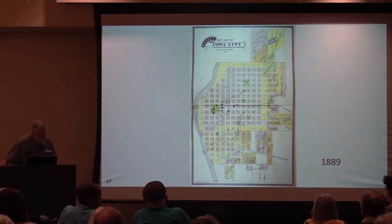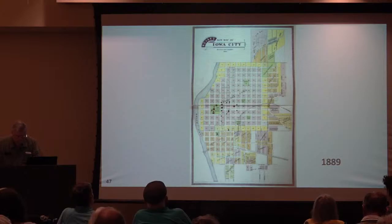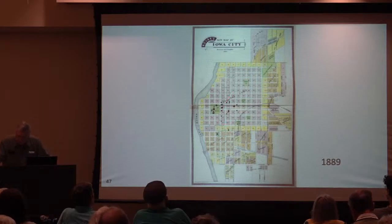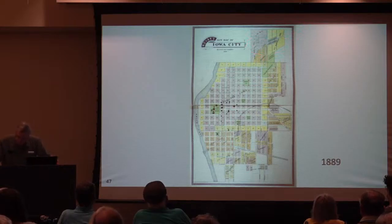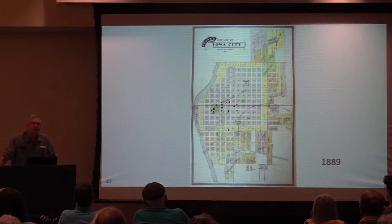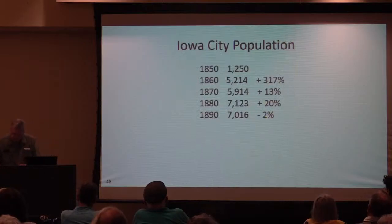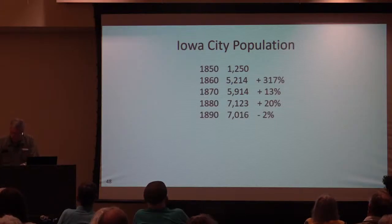On this 1889 map, the original city is shown in pink, block by block, with numbers ascribed originally. Many additions are labeled to the north, south, and east, and up in the upper right is one I want to talk about — the St. Matthias addition, in the area of today's Hilltop Tavern and Restaurant. Iowa City actually had a small decrease in population during the 1880s, which seems surprising since manufacturing was booming, but that's what the census figures showed.